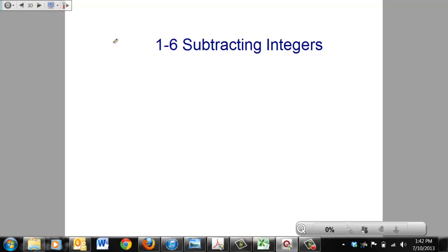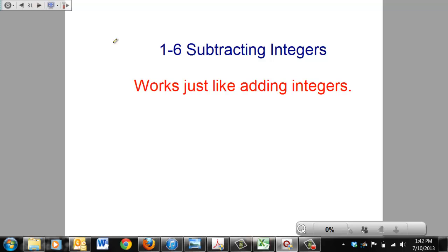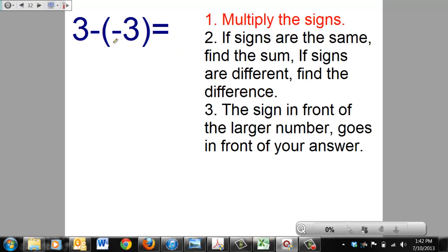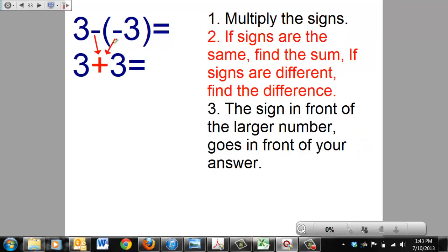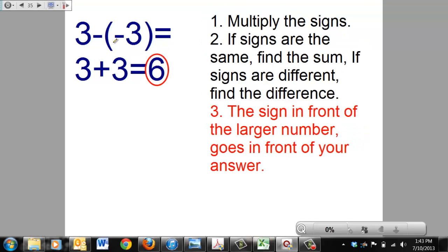Chapter 1, section 6, subtracting integers. Guess what? It works just like the adding integers does. Same exact rules. So with that in mind, try working that problem on your own. Alright, hopefully you paused the recording and did that. We're starting off with an ugly problem scenario here. You've got the negative and the negative. Negative times a negative equals a positive. So that's just 3 plus 3. And if you really required using steps 2 and 3 to solve that one, go for it. Signs are the same, find the sum. Sign in front of your larger number goes in front of your answer. 6 is your final solution.